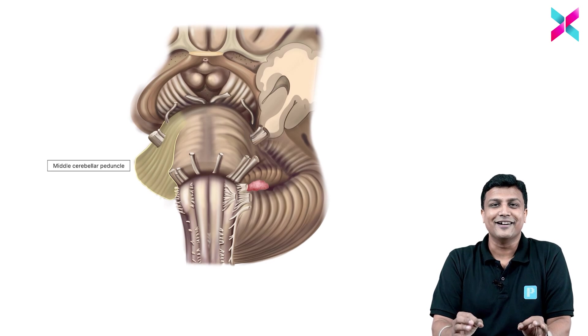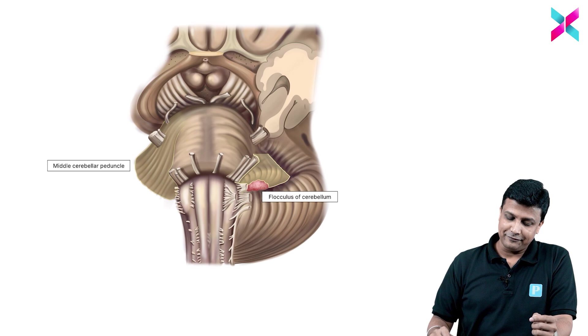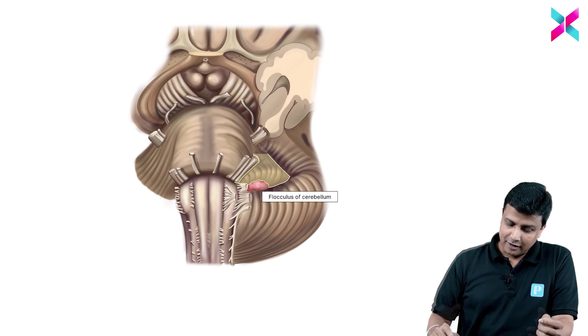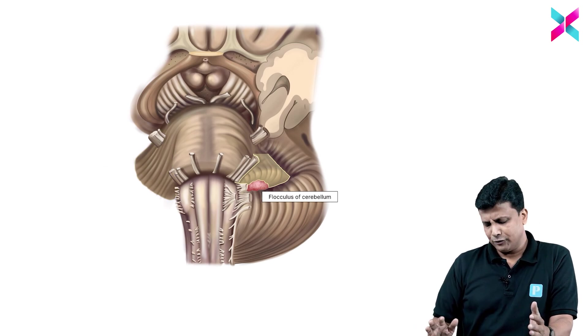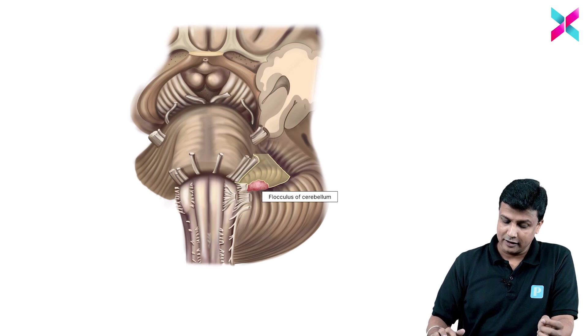And this one here is pons, and this one here will be the middle cerebellar peduncle. And what is the nerve coming out at the junction of pons and middle cerebellar peduncle? That will be the fifth nerve which is going to come. Also, of course this one here will be the part of your cerebellum which is going to connect with the middle cerebellar peduncle - that is flocculus of the cerebellum there. And this is the cut surface of the temporal lobe.